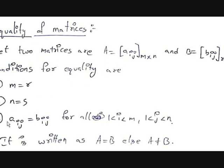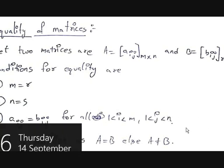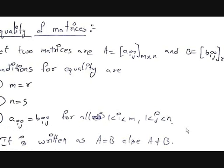And the last condition is Aij is equal to Bij for all 1 ≤ i ≤ m and 1 ≤ j ≤ n — meaning the values of i vary from 1 to m and the values of j vary from 1 to n. If all conditions hold, we write A equals B; otherwise, if any of these conditions fails, we write A is not equal to B.